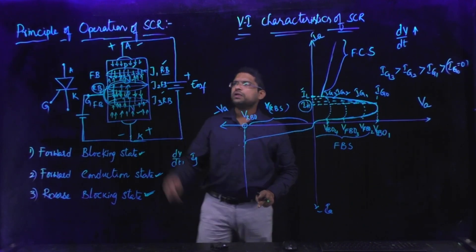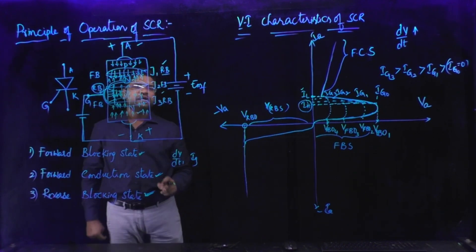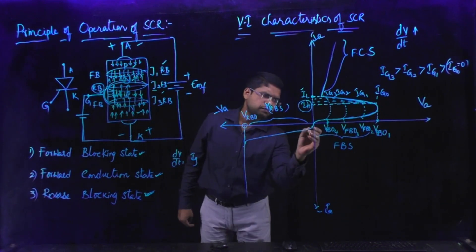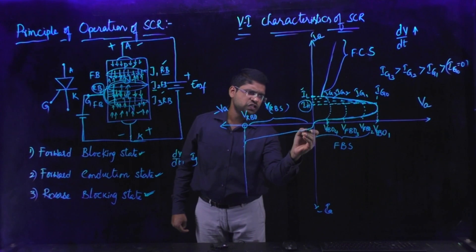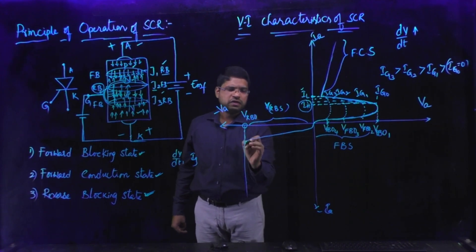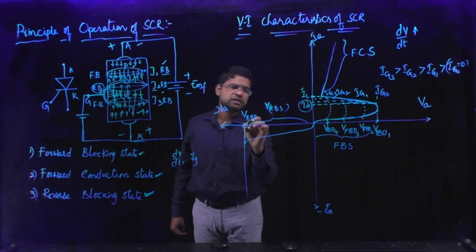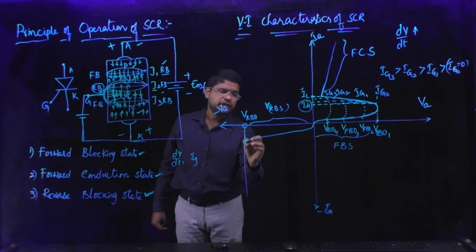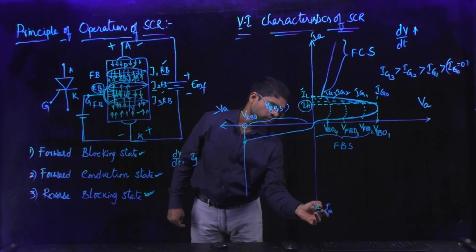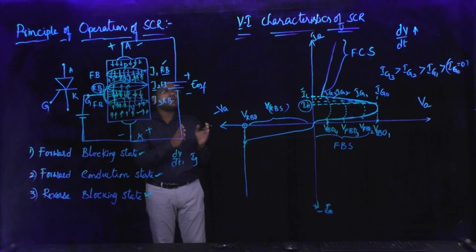Now let us consider the reverse bias condition of SCR. During reverse bias condition, we apply higher potential to the cathode with respect to anode, so junctions J1 and J3 are reverse biased and junction J2 is forward biased. During this reverse bias condition, if there is a high rate of change of reverse bias voltage, at a particular instant there will be a breakover — that is called avalanche breakdown. So during reverse bias condition there is also an avalanche breakdown voltage called the reverse avalanche breakdown voltage. At the reverse breakover voltage, current flows through the device in the reverse direction, which is shown on the negative anode current axis.